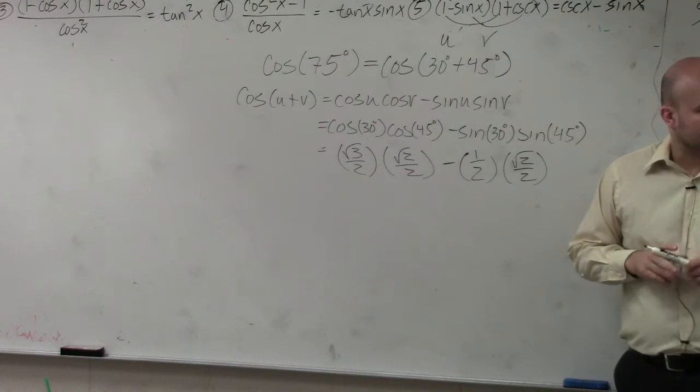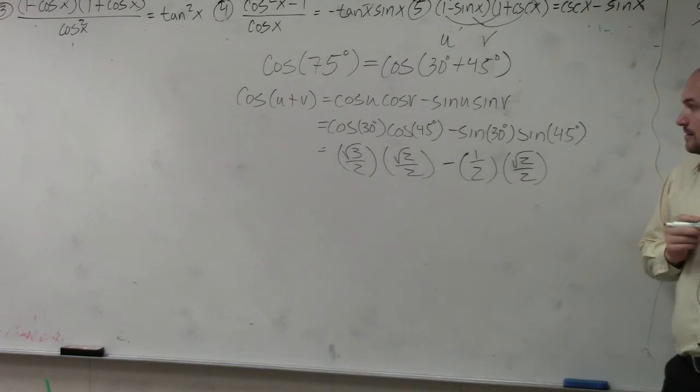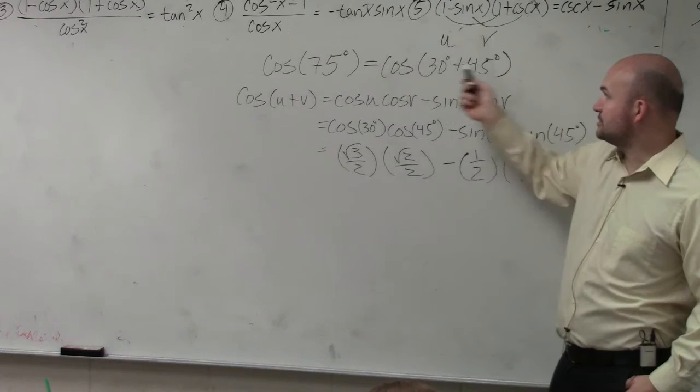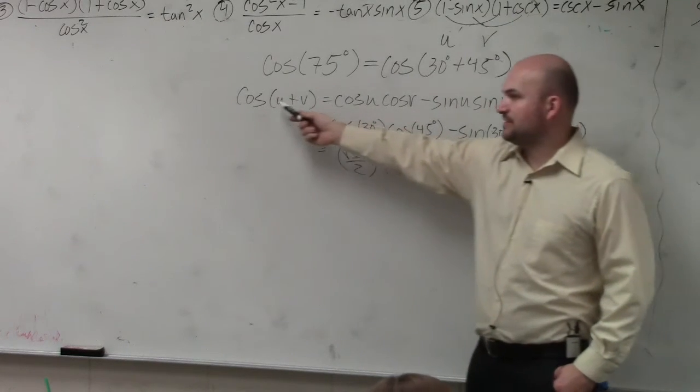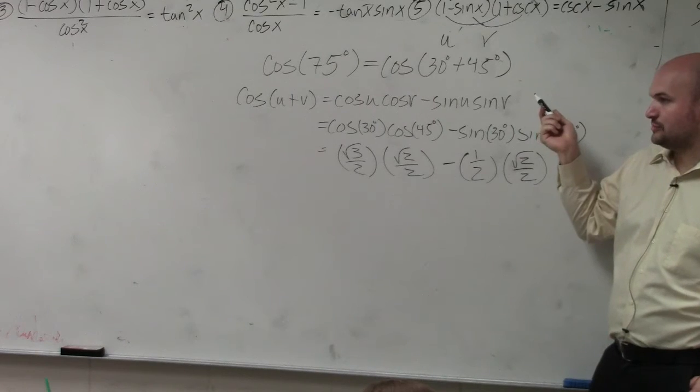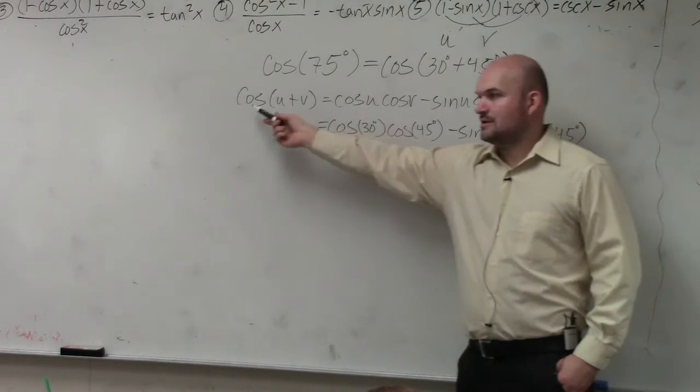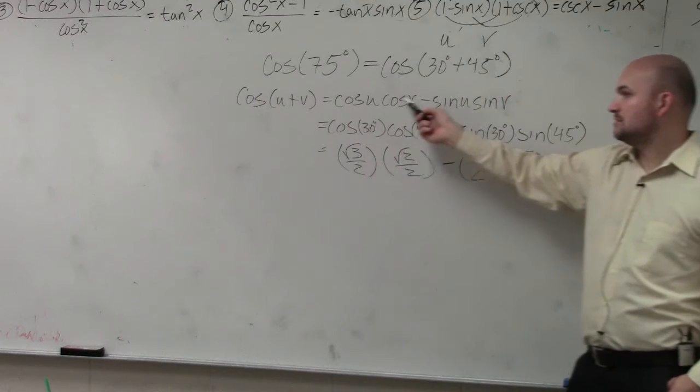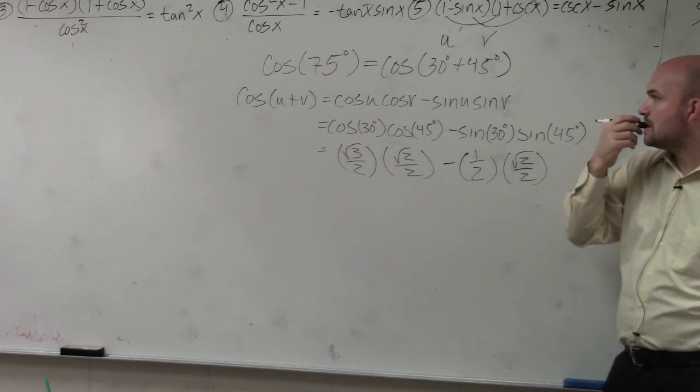Does everybody agree with me on this? OK. Do you understand how I broke up 75 degrees to 30 and 45? Do you agree with me that formula was provided to you? I gave you that formula. That's what I told you to write down. Cosine of u plus v. But my interest is cosine of u times cosine of v minus sine of u times sine of v.